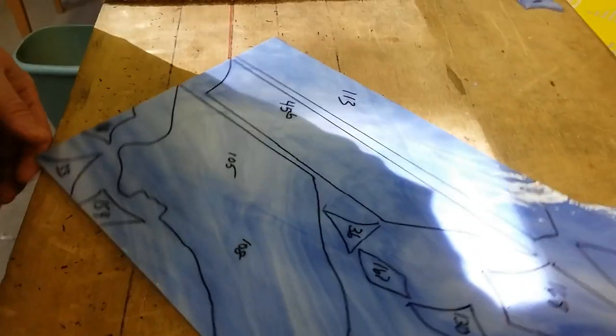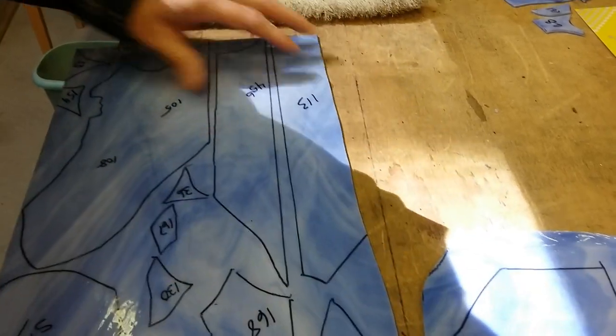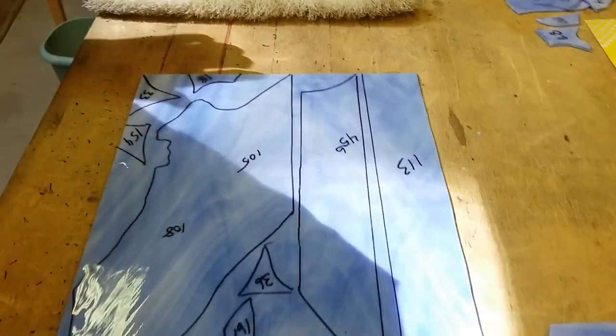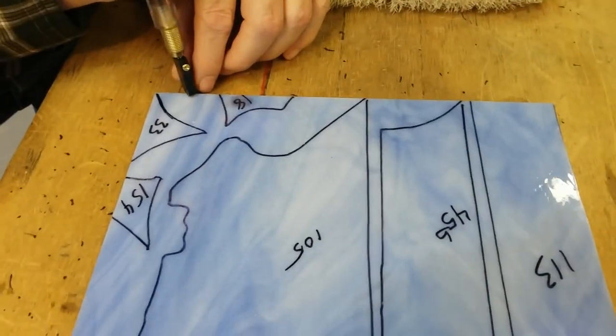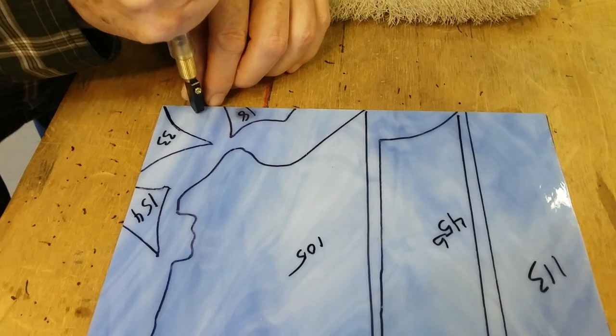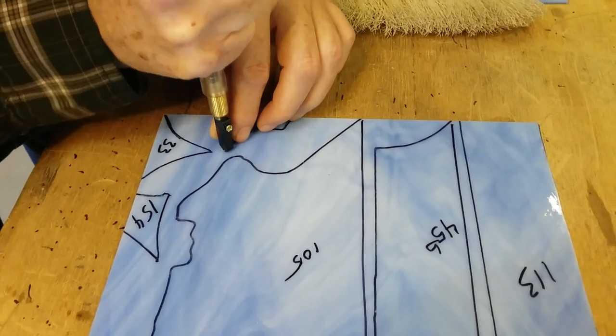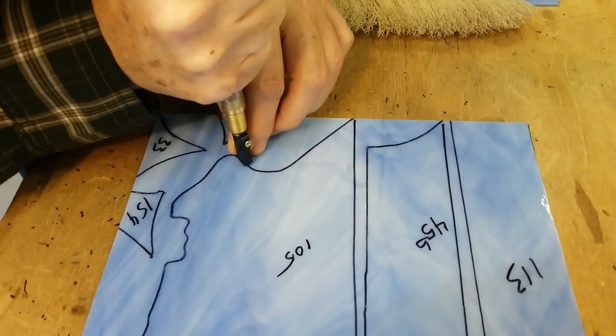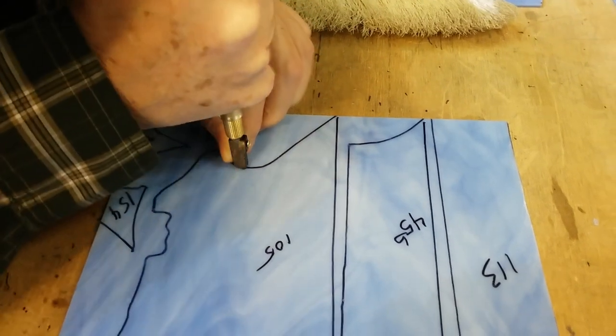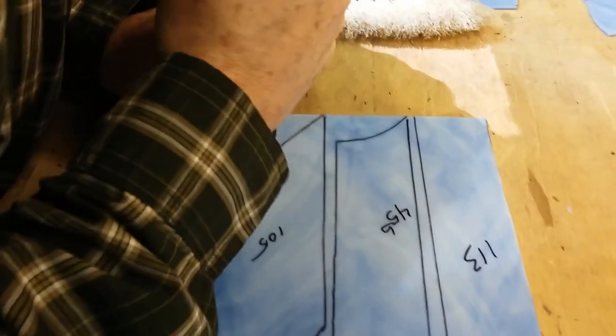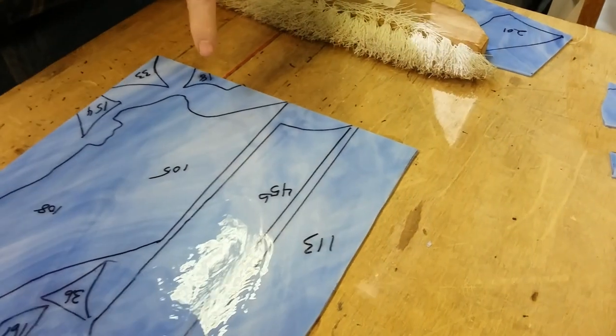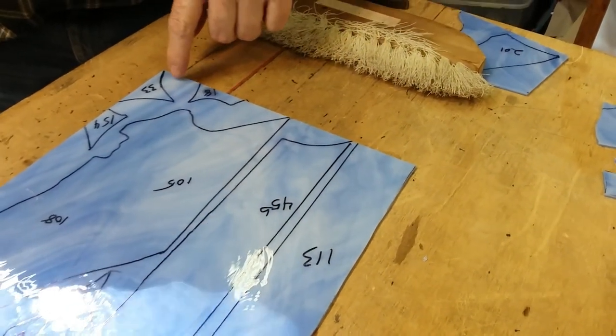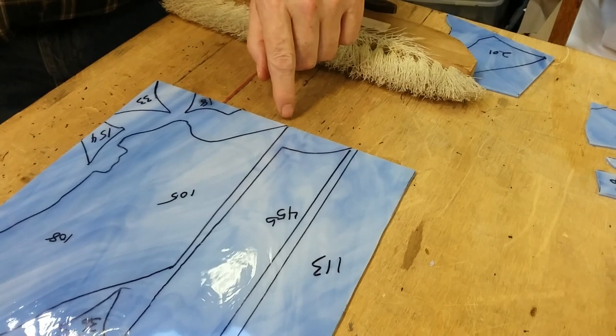So what we do, I'm going to start out here and score right around on the inside. I've scored it from here all the way around on this outside edge.